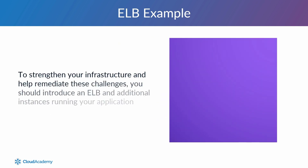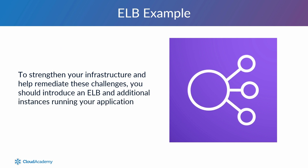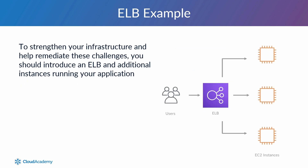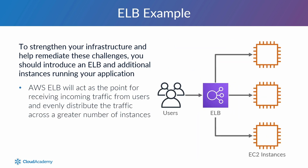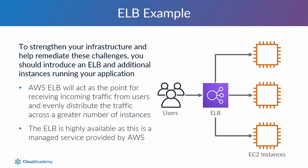As a result, to strengthen your infrastructure and help remediate these challenges — the unpredictable traffic spikes and high availability etc. — you should introduce an Elastic Load Balancer and additional instances running your application into the design as shown. The AWS Elastic Load Balancer will act as the point for receiving incoming traffic from users and evenly distribute the traffic across a greater number of instances. By default, the ELB is highly available as this is a managed service provided by AWS, so they ensure its resilience so we don't have to.